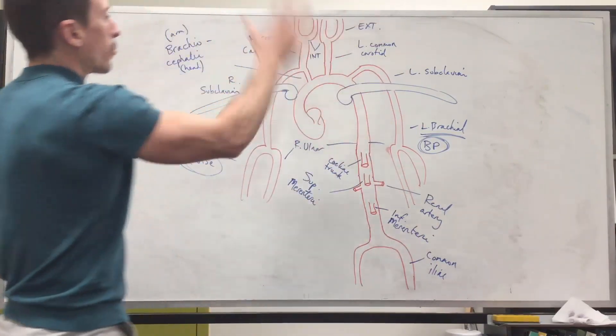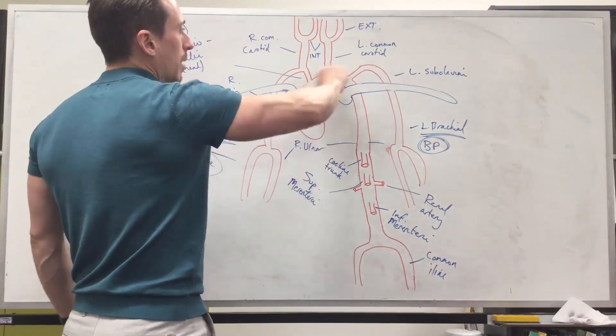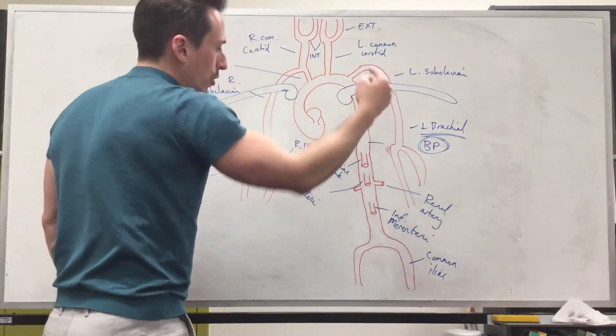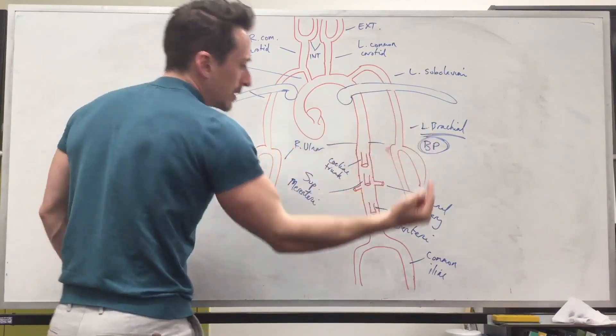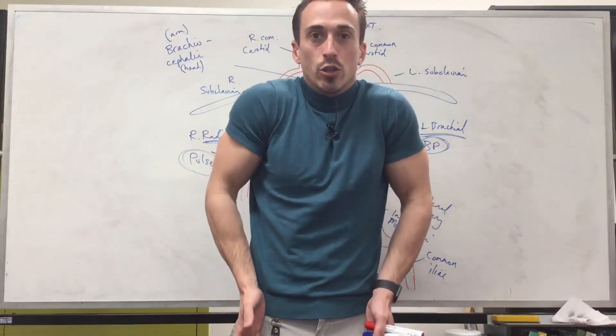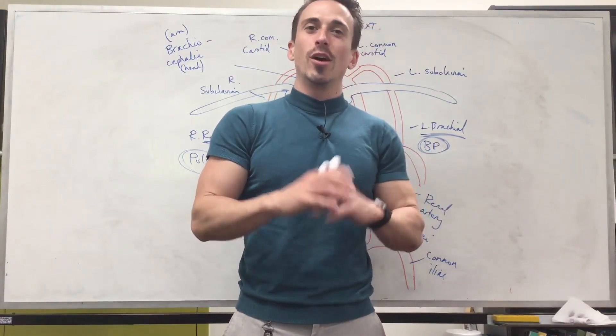Now these are the major branches of the aorta. We've got the left ventricle pushing up the aortic arch which is three main branches up the top. Then it goes down into the abdomen with celiac trunk, superior mesenteric, renal arteries, inferior mesenteric and then branching for the common iliac as we go into our pelvis and legs. So these are the most common branches of the aorta.